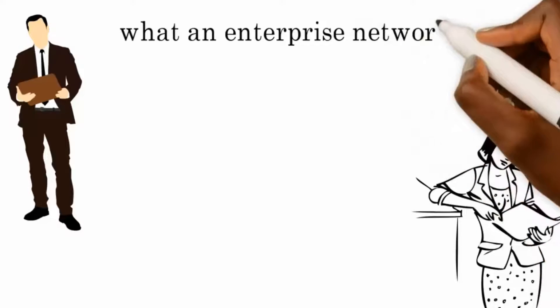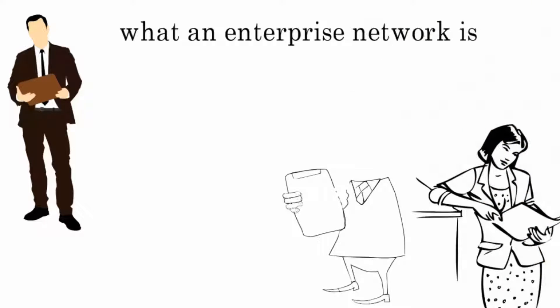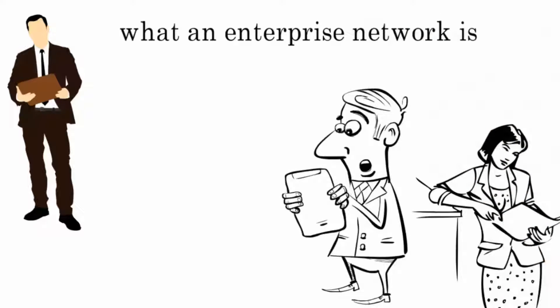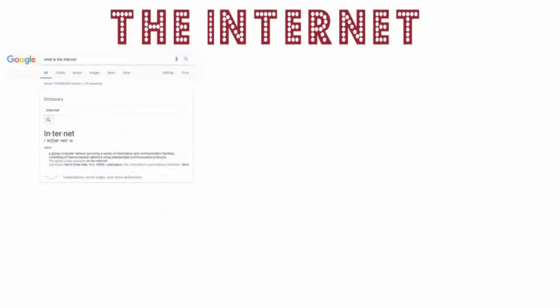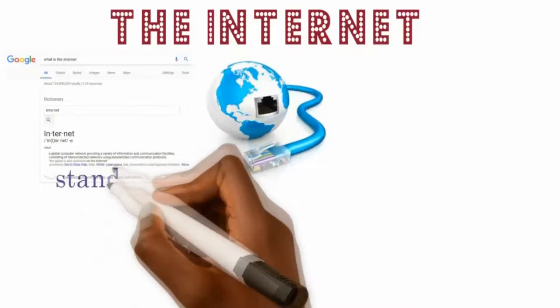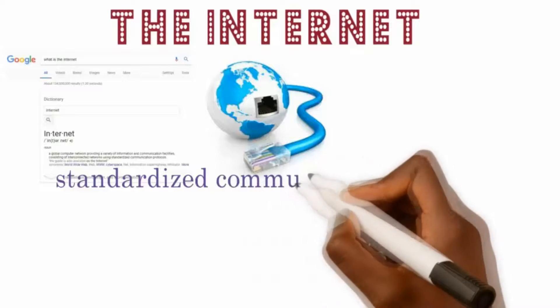Now that you know what an enterprise network is, guess what? You actually already know what the internet is. According to my Google research, the internet is a global computer network providing a variety of information and communication facilities consisting of interconnected networks using standardized communication protocols.